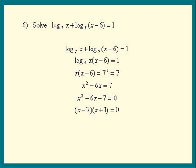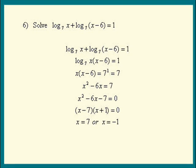Same thing for a product to be 0. At least one of the factors must be 0. We find that x is 7 or x is negative 1.